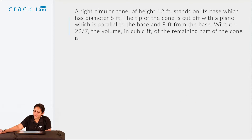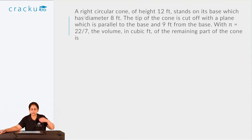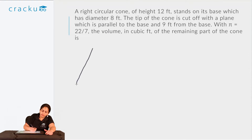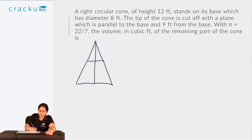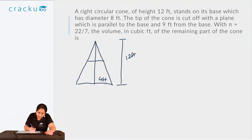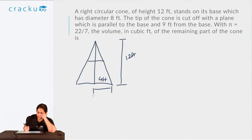Now let us go on to the next question. A right circular cone of height 12 feet stands on its base which has diameter 8 feet. The tip of the cone is cut off with a plane which is parallel to the base and 9 feet from the base. With π equal to 22/7, the volume in cubic feet of the remaining part of the cone is what? It is given that the height is 12 feet and the base diameter is 8 feet, so the radius is 4 feet.